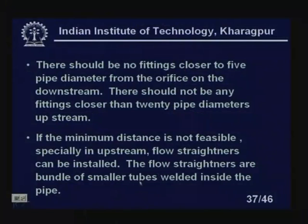If the minimum distance is not feasible because pipe bends are unavoidable, flow straighteners can be installed both upstream and downstream. Flow straighteners are bundles of smaller tubes welded inside the pipe. They make the flow more uniform so that the disturbances caused by pipe bending or elbows can be minimized.